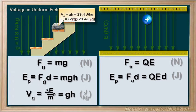Again, kilograms cancel: 58.8 joules. So we note that gravitational potential is quite useful. If we have a gravitational potential V subscript g, then we know what the potential for energy is at this position, and all we need is the mass.